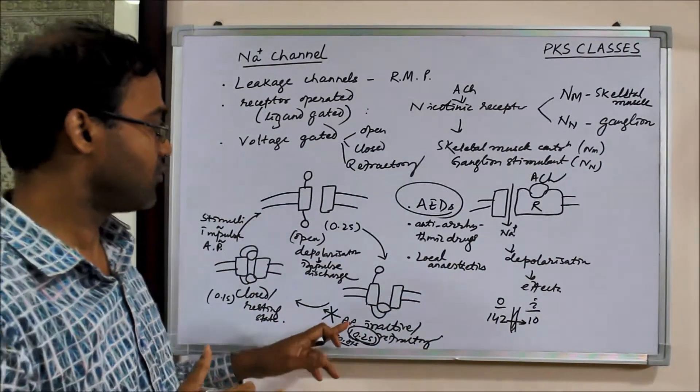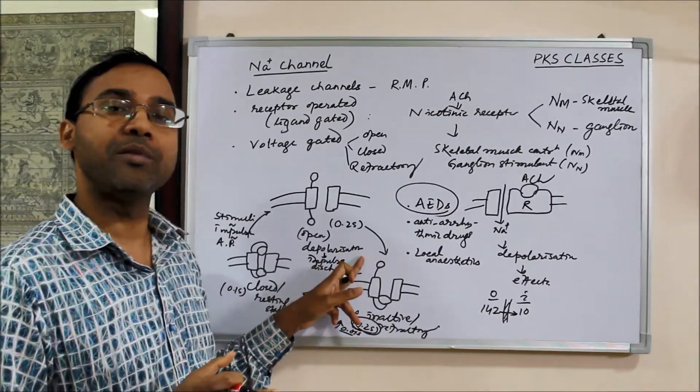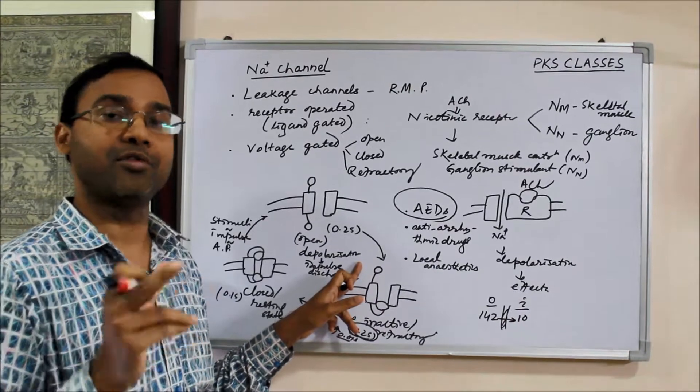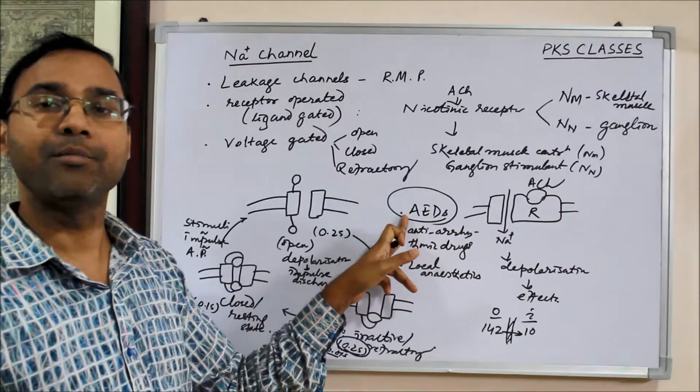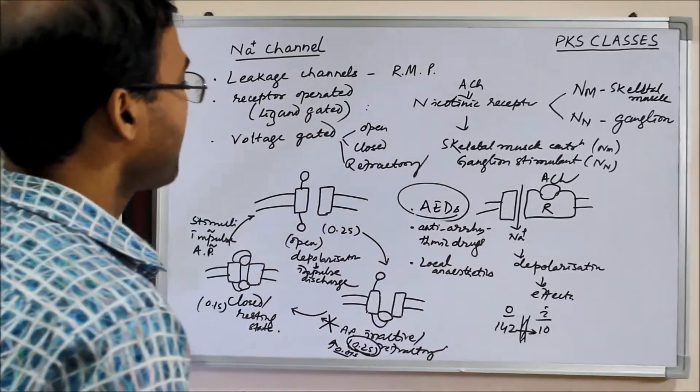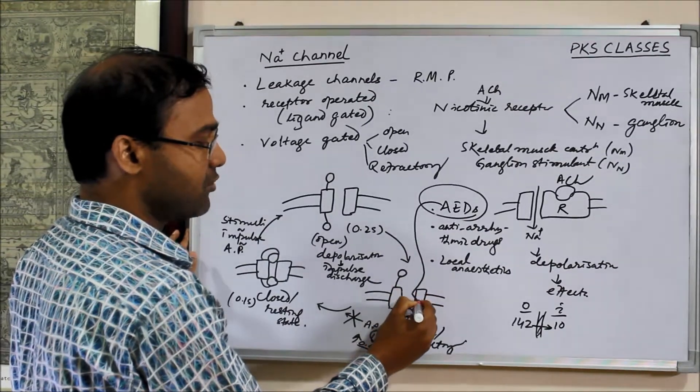Normal neurons should not be affected. Normal neurons will not be affected and only those neurons which have high frequency will be affected. That means the neurons of an epileptic patient. All these anti-epileptic drugs, they bind to this state only.